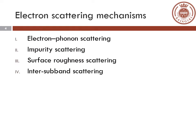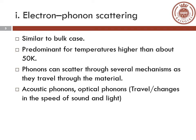During parallel transport of electrons, there could be different electron scattering mechanisms. They are mainly classified as electron-phonon scattering, impurity scattering, surface scattering, and inter-subband scattering. First we will focus on electron-phonon scattering. A phonon is a collective excitation in a periodic elastic arrangement of atoms or molecules in condensed matter, specifically in solids and some liquids. This electron-phonon scattering is similar to what we see in 3D semiconductors.